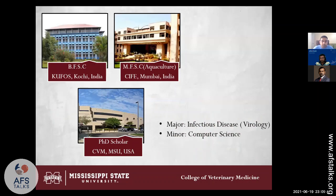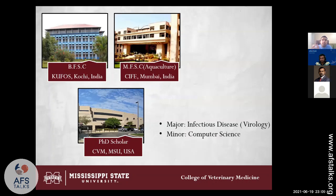Dr. Deepak George has already introduced me. I did my bachelor's in CUFOS, master's in CIFE, and I'm doing my PhD in the US. My major is virology. I started as a virologist, then later got interested in genomics, and ended up going to computer science, taking around 20 credits — six or seven courses — to get a minor in computer science. Because we all do genome analysis — we put something into software and get something out — but we really don't know what is happening inside. That's why I took all those courses.